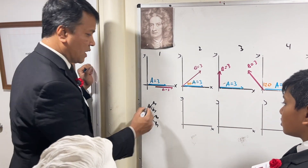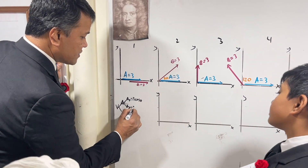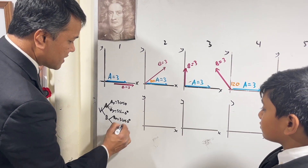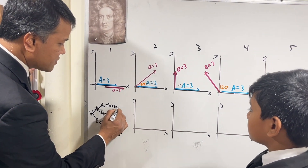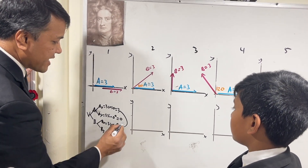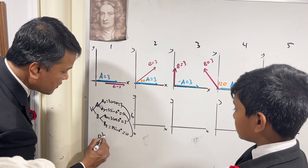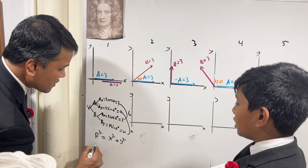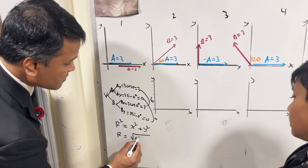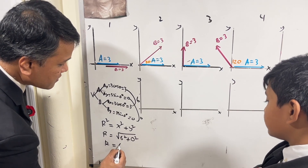You have to do the tree diagram as well. This is 3 cosine 0 degrees and this is 3 sine 0 degrees. And this is 3 cosine 0 degrees and this is 3 sine 0 degrees. This is 3, this is 0, this is 3, this is 0. X plus X, Y plus Y — c squared equals x squared plus y squared — so the resultant R is 6.